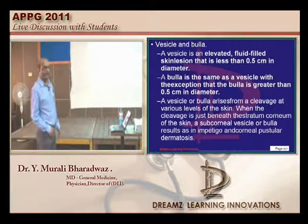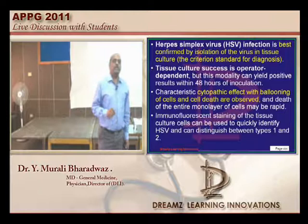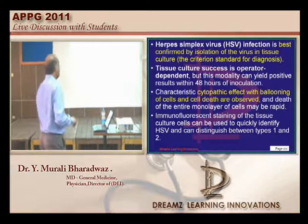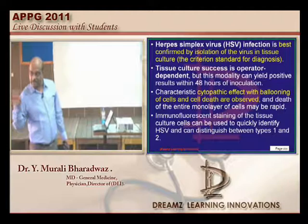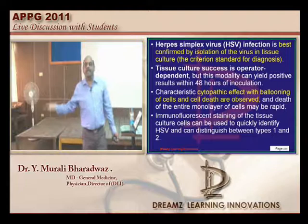Herpes genitalis is best confirmed by isolation of the virus in tissue culture. That is why tissue biopsy and culture is the method. Viral culture was the option, and isolation of the virus in tissue culture is the gold standard for diagnosis of herpes genitalis.